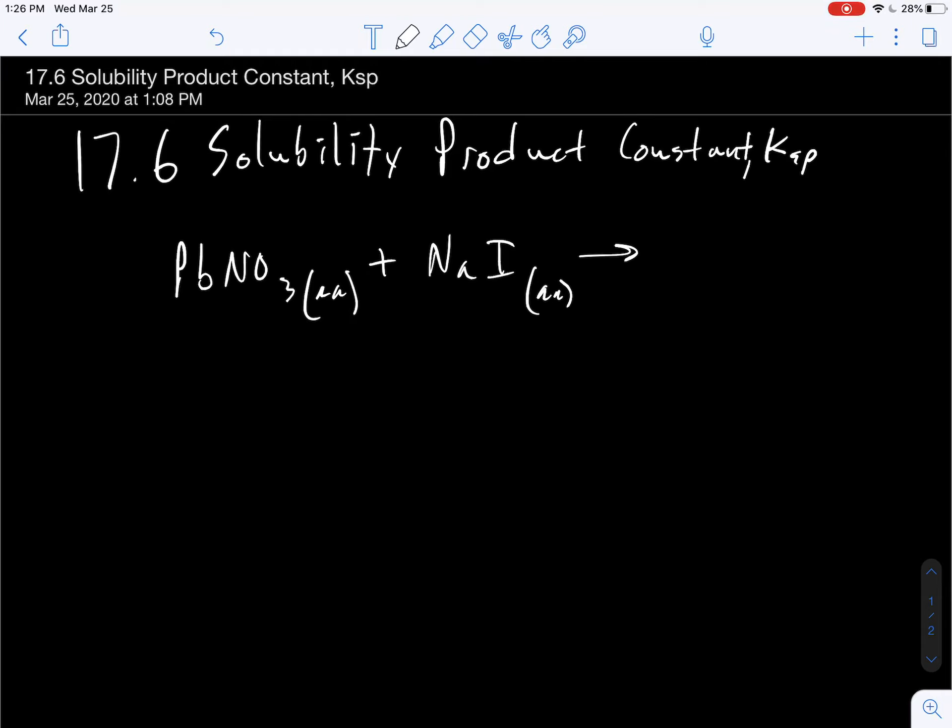To begin talking about the solubility equilibrium situation, let's go back to Chem 1 and think about what happens when we add these two solutions together. I've got lead nitrate aqueous and sodium iodide aqueous and we learned these solubility rules to help us predict whether or not two ions come together would produce a solid product or would it be aqueous.